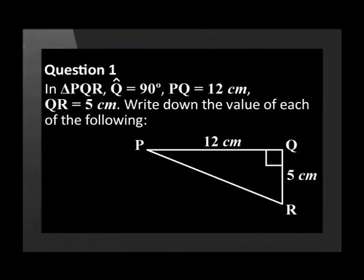Question 1. In triangle PQR, angle Q equals 90 degrees, PQ equals 12 centimeters and QR equals 5 centimeters. Write down the value of each of the following: sine P, cos P, tan P.